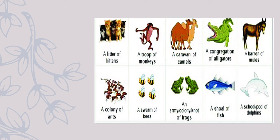A litter of kittens — there's a litter of puppies also. A troop of monkeys disturbing everyone. A caravan of camels. A congregation of alligators in the zoo. A barrel of mules. A colony of ants, a swarm of bees. Frogs can have a colony or army. A school of fish — there is also a shoal of fish. A school or pod of dolphins. The collective nouns are: litter, troop, caravan, congregation, barrel, colony, swarm, army, shoal, school, and pod.